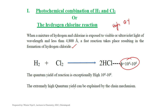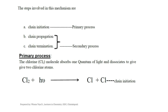The extremely high quantum yield can be explained by the chain mechanism. The steps involved are: chain initiation, chain propagation, and chain termination. Chain initiation comes under the primary process, whereas chain propagation and chain termination come under the secondary process. In the primary process, one molecule absorbs one quantum of light radiation to give an activated molecule. Here, in the formation of hydrogen chloride, the chlorine molecule absorbs one quantum of light and dissociates to give two chlorine atoms. This is chain initiation.